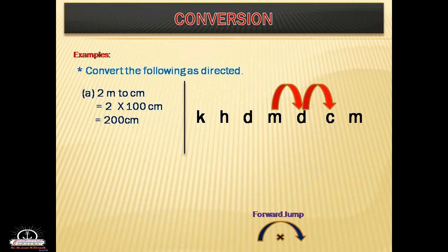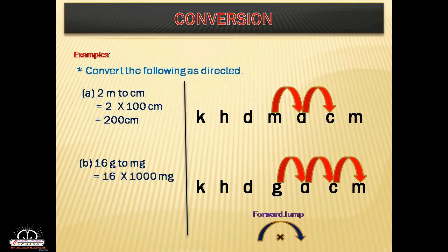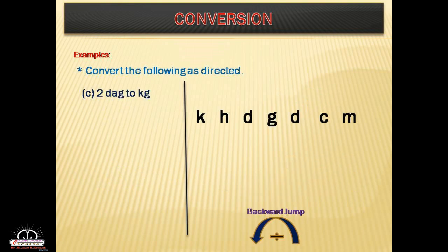Next example: 16 grams to milligrams. Converting gram to milligram means jumping forward — higher unit to lower unit. So 16 multiplied by 1000, because it is a three-jump. The final answer is 16,000 milligrams.